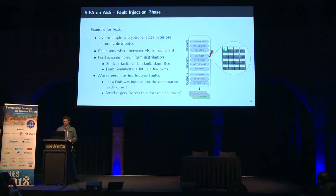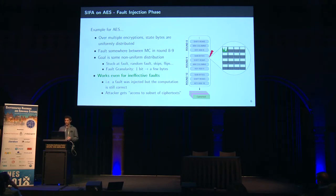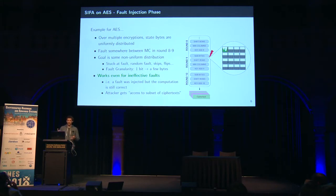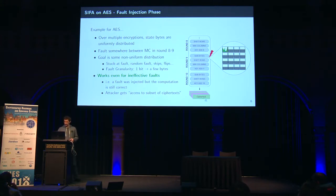We want to achieve a fault attack that works even in the presence of fault countermeasures, meaning the attacker never sees any faulty output. An interesting observation is that faults can still achieve a non-uniform distribution if we restrict ourselves to ineffective faults. Whenever we inject a fault, we may or may not receive a ciphertext depending on whether the fault affected the computation — for example in a redundancy-based countermeasure. In this sense, you can think of the fault as a filter that gives an attacker access to just a subset of all possible correct ciphertexts.